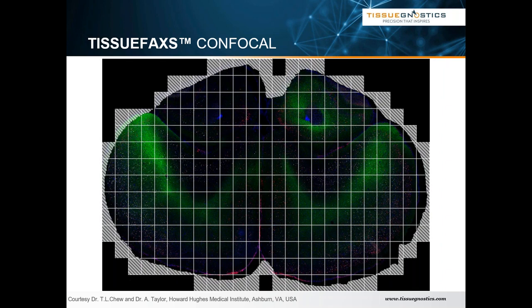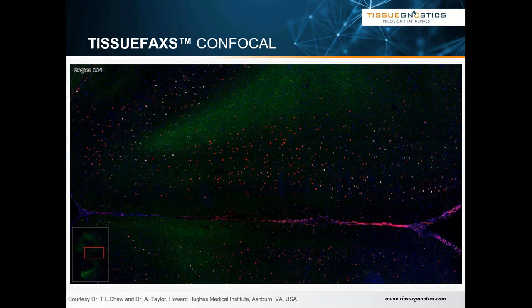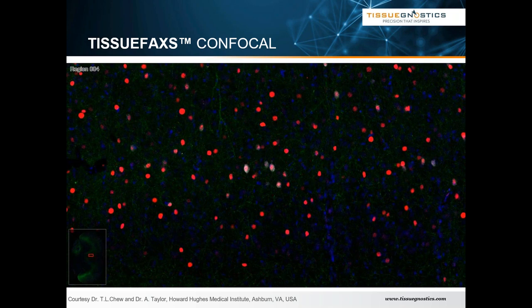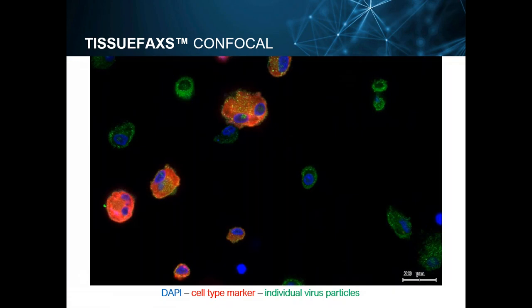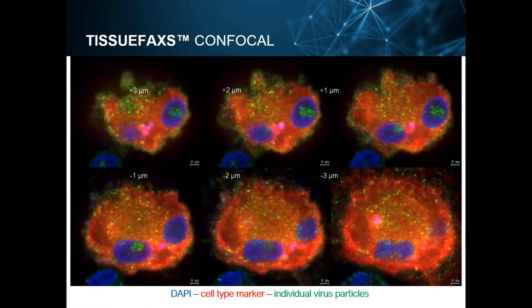The confocal scanners use the same type of workflow: field of view by field of view scanning. Each of those fields of view are stitched back together to create a digitized slide, and then we can zoom in and just enjoy these high-resolution slides. This also applies for cells in suspension — these are HIV-infected macrophages that were scanned with a confocal slide loader in Boston. Here you can see the different optical sections — plus three microns at the top to negative three down at the bottom.